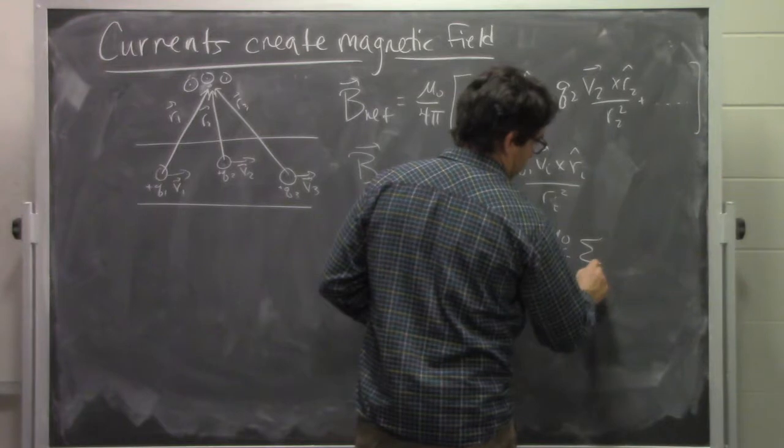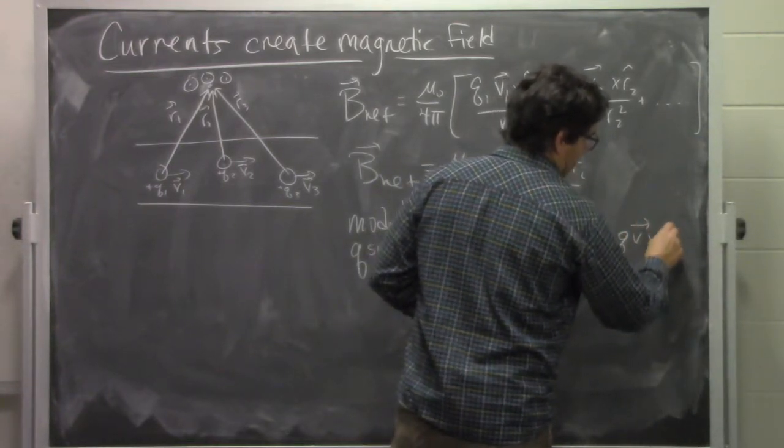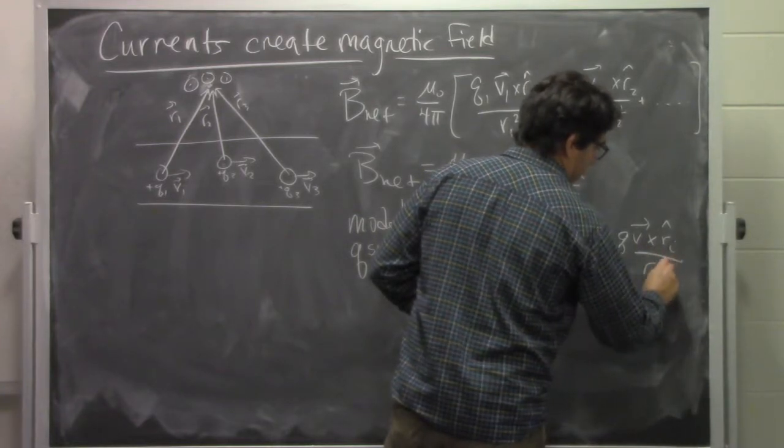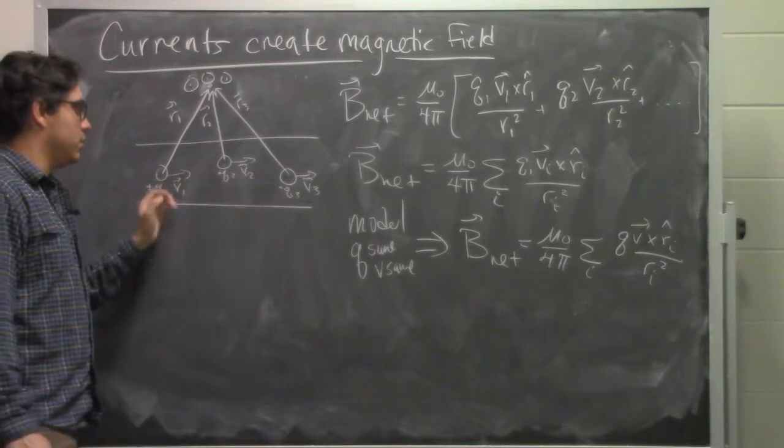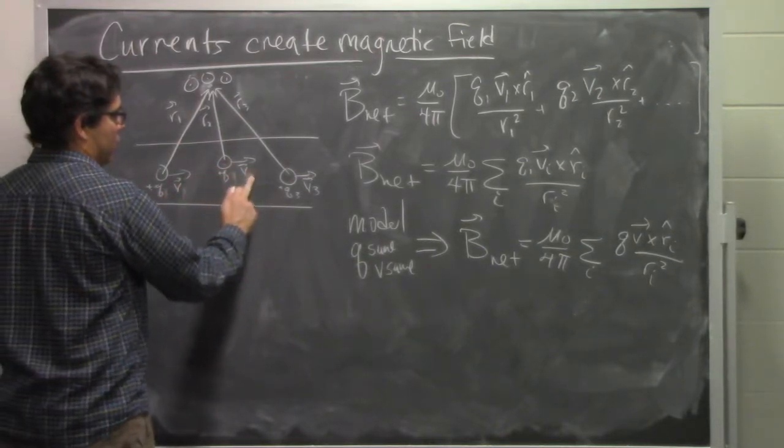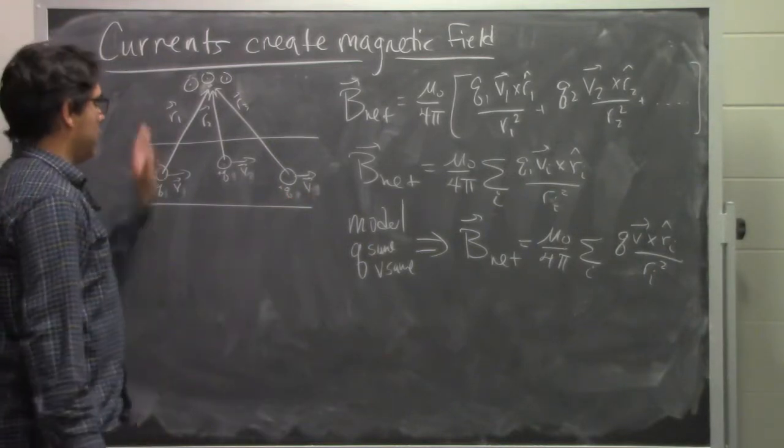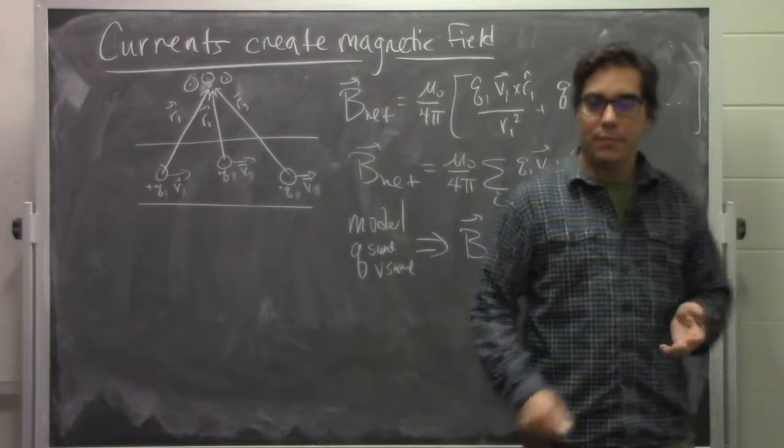The sum is now only over the relative positions of the charges. In this case, we had Q1, Q2, Q3, V1, V2, V3. In fact, what we have is Q, V, Q, V, Q, V. And the only thing that's different is where they are in the wire.